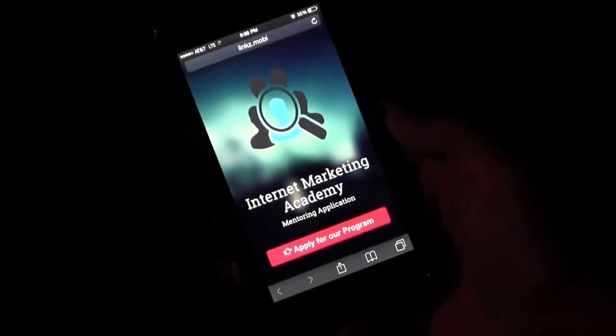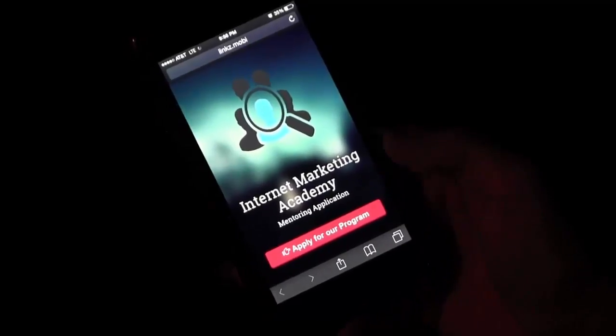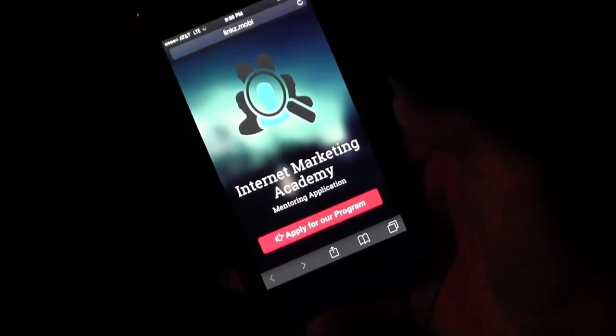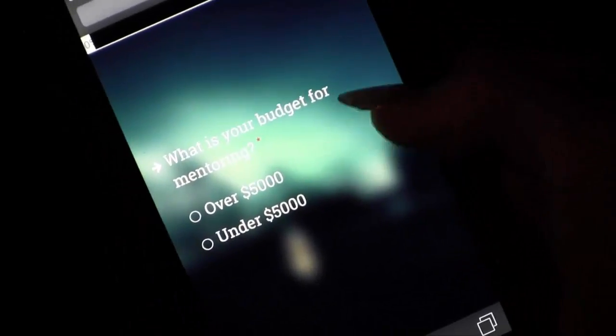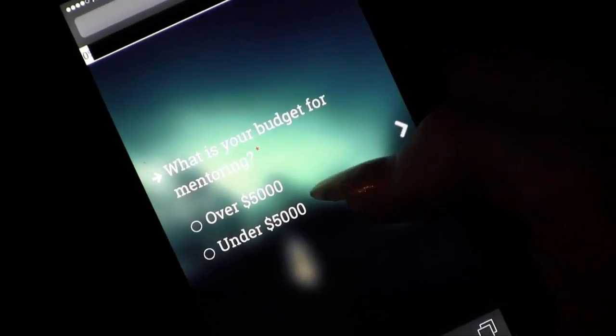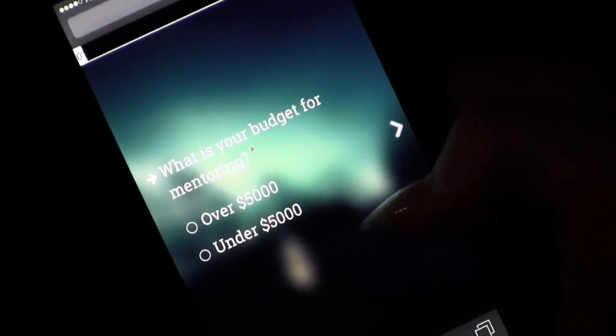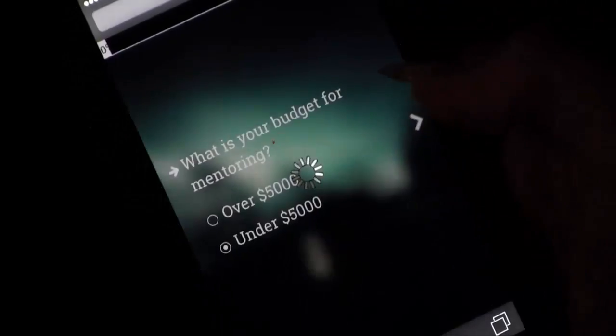All right, cool. So I'm on my iPhone 6 and I'm checking out the Internet Marketing Academy mentoring application. So let's apply for the program and see what the survey does. So the first question it asks me is, what is your budget for mentoring? Well, I've got two choices. I can choose over $5,000 or under $5,000. So I'm going to choose under $5,000.